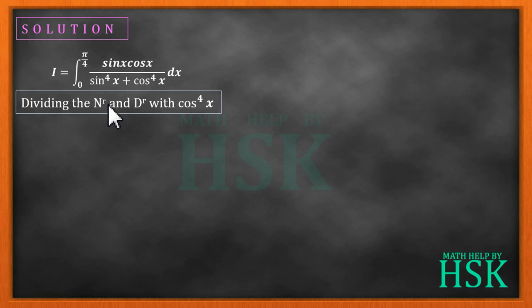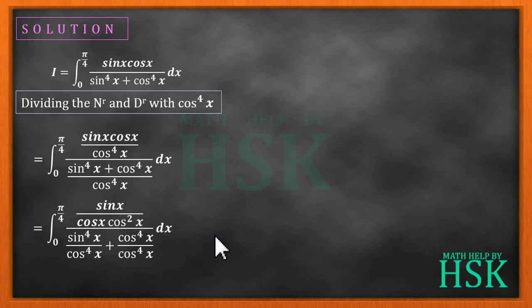To solve this question I'm going to divide the numerator and denominator by cos to the power 4x. Next, I can cancel this cos x to obtain cos cube x here, and I'm going to divide this cos power 4x separately with these two terms.